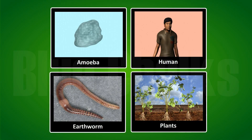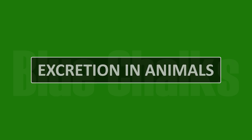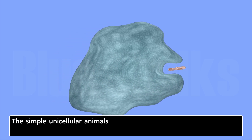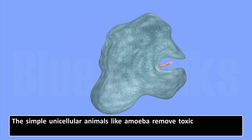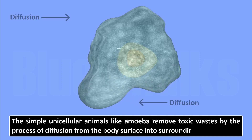Different organisms have different methods for excretion. First, we will discuss the process of excretion in animals. The simple unicellular animals like amoeba remove toxic wastes by the process of diffusion from the body surface into the surrounding medium.